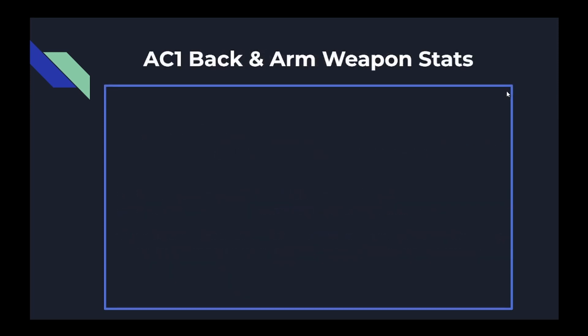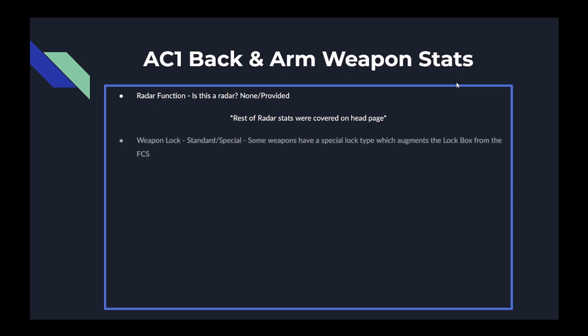The next parts are the back and arm weapon stats. The radar function stat is simply whether a part is a radar — none or provided — which seems redundant since you can tell if a part is a radar. The rest of the radar stats were covered in the head section.